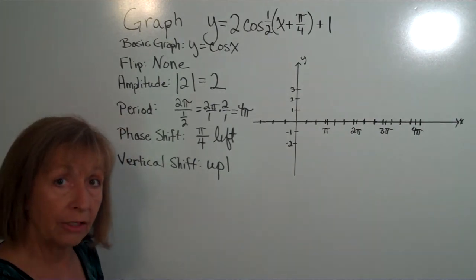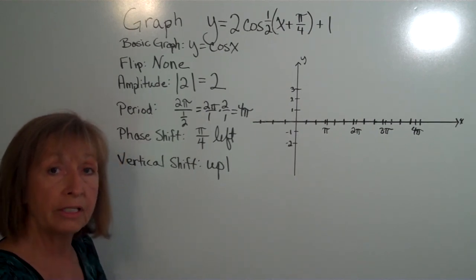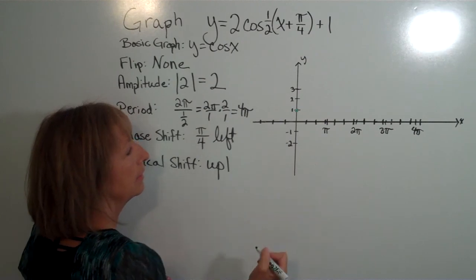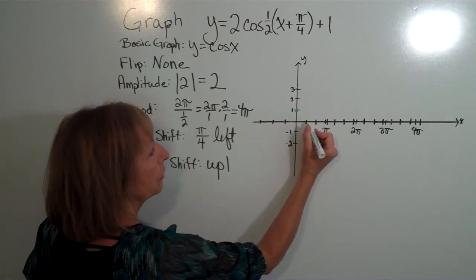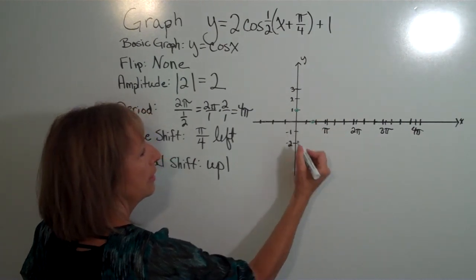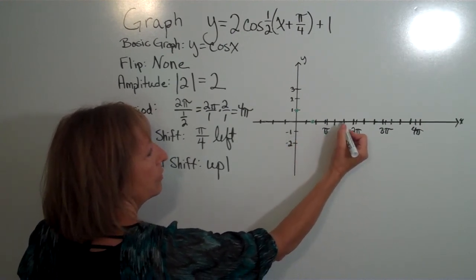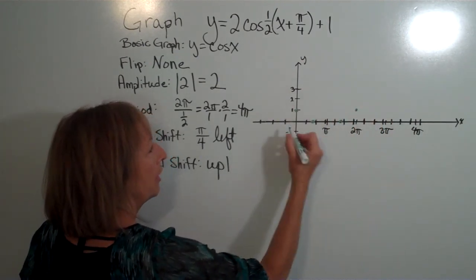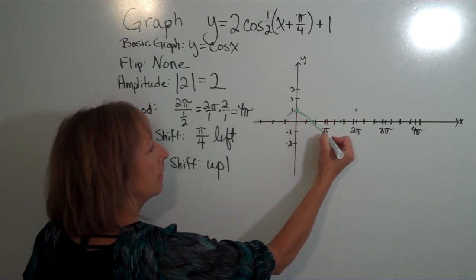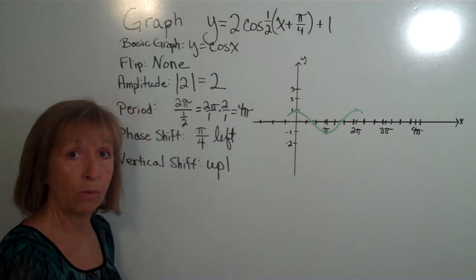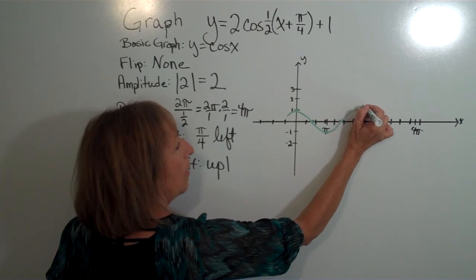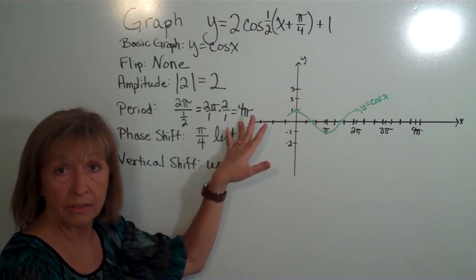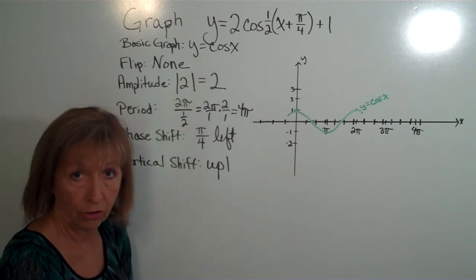For the regular cosine function, the normal period runs from 0 to 2π. Cosine of 0 is 1; cosine of π/2 is 0; cosine of π is −1; cosine of 3π/2 is 0; and cosine of 2π is 1. I'll draw one period of the basic y = cos(x). The axis is set up for the new period, but the basic shape is drawn where it normally occurs.